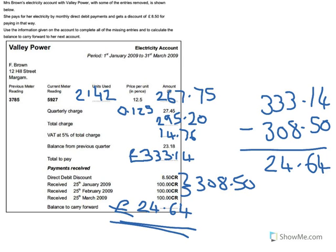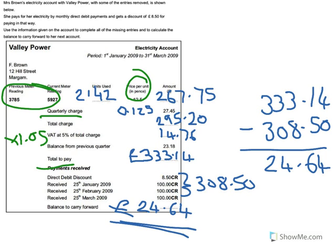With these questions you've got to remember just a few things: take your meter readings away from each other; remember the cost per unit will probably be given in pence, so multiply by the pound version of it because the quarterly charge isn't always in pounds; add your VAT — normally it's best to do that by multiplying by 1.05; get your total. And what's been added in recent years is some payments received, which you then have to subtract from the total amount to pay.